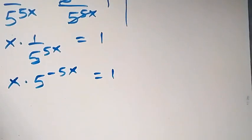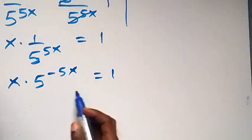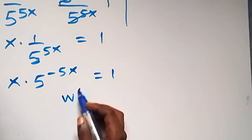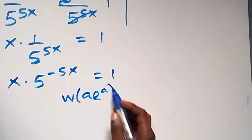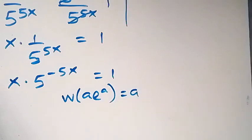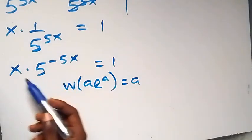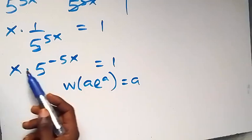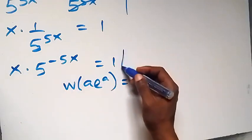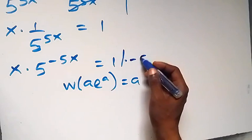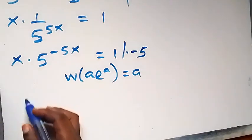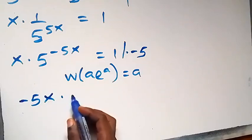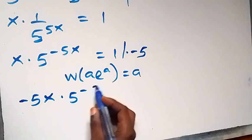Now from here, we want to make use of the Lambert W function. When we have W(a · e^a), that equals a. So let's make this coefficient the same as the power. We multiply both sides by minus 5, giving us minus 5x times 5 raised to power minus 5x.